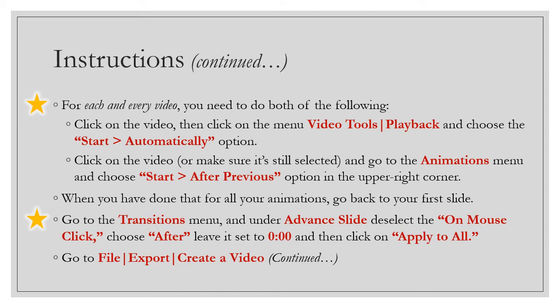You also want to make sure the video is still selected and go to the Animations menu, then choose 'Start After Previous.' That option is in the upper right corner. The Animations menu is usually used for those unnecessary animations like star wipes or things that flip in from the side — we're not doing that here. Just select the video, go to Animations, and choose Start After Previous. You have to do both of those things for every single video or this will not work.